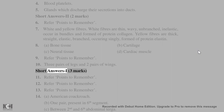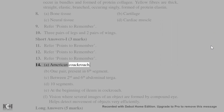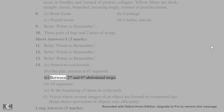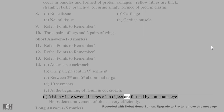Short answers I, 3 marks: 11. Refer points to remember. 12. Refer points to remember. 13. Refer. 14. A. American Cockroach. B. One pair, present in sixth segment. C. Between second and sixth abdominal terga. D. 10 segments. E. At the beginning of ileum in cockroach. F. Mosaic vision: vision where several images of an object are formed by compound eye; helps detect movement of objects very efficiently.